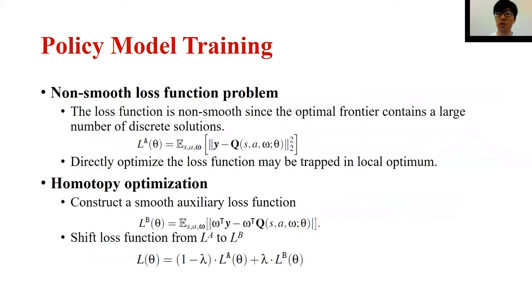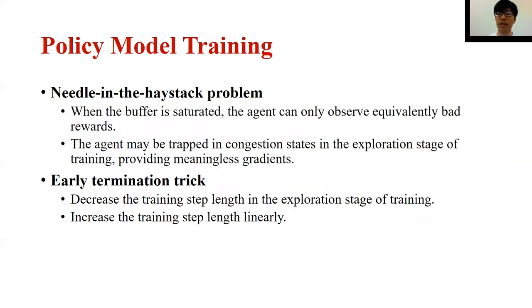Unfortunately, the loss function is non-smooth, since the optimal Pareto frontier contains a large number of discrete solutions. To solve this problem, we adopt a homotopy optimization technique. We first consider a smooth auxiliary loss function, then the final loss function is shifted from the auxiliary function to the original loss function gradually. Another problem is the needle-in-a-haystack problem: when the buffer is saturated, the agent can only observe equivalent rewards, so the agent may be trapped in congested states during the exploration stage of training, providing meaningless gradients. To solve this, we propose a simple but effective method called the early termination schedule. Its basic idea is to decrease the training step limit at the beginning of training and increase the training step limit linearly with the episode index.